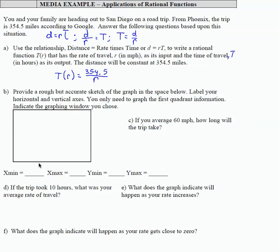When I graph this function, I want to stay in the first quadrant, because it doesn't make sense to have negative values for time or for rate. So I'm going to recommend a window from 0 to 80. Remember, the xmin, xmax, the x-axis represents my input, which is rate.